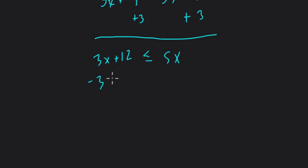So here I'm going to subtract 3x from both sides. And what happens then? We have 12 is less than or equal to 2x.